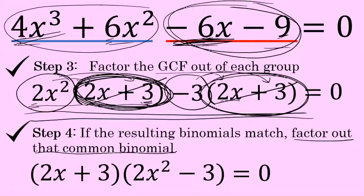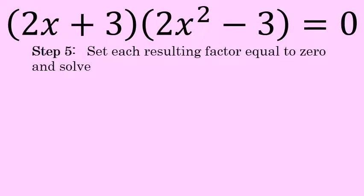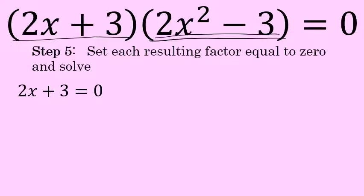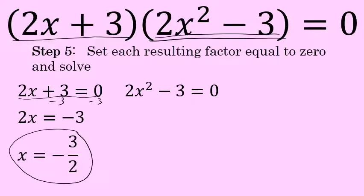There's one more step to do. Step 5, the final step, is to set each resulting factor equal to 0 and solve. Our two factors are 2x plus 3 and 2x squared minus 3. Setting those equal to 0: 2x plus 3 equals 0, and 2x squared minus 3 equals 0. We'll solve both equations, and those solutions, taken as a set, will be the solutions to the original polynomial. First, solving 2x plus 3 equals 0: subtract 3 from both sides and divide by 2 to get x equals negative 3 halves. This is one of the solutions.